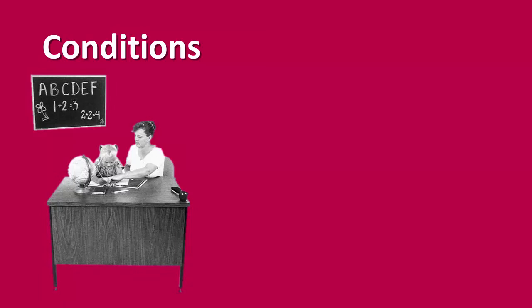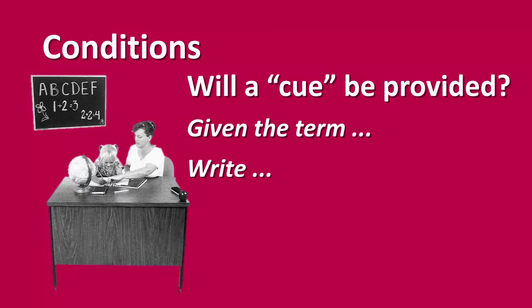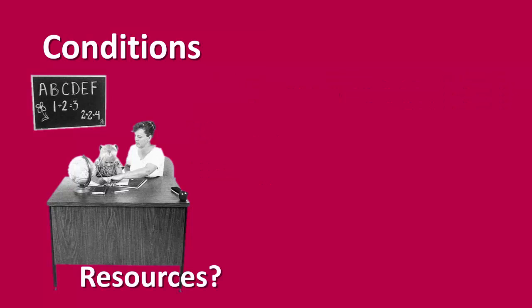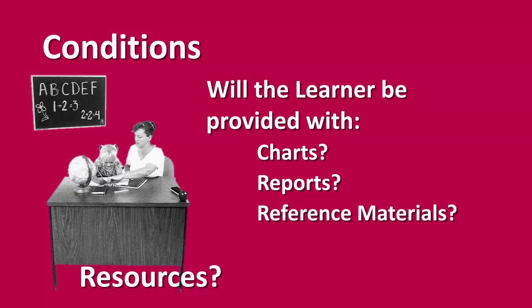Conditions are the exact set of circumstances and resources available to the learner. When defining conditions, the designer needs to consider the behavior being demonstrated and the characteristics of the target population. Will a cue be provided, such as "given the term"? What resources will be required to perform the task — will there be charts, reports, or reference materials provided to the learner? The designer also needs to consider the scope and complexity of the task and how relevant the information will be. These are the things that make up the condition of the performance objective.